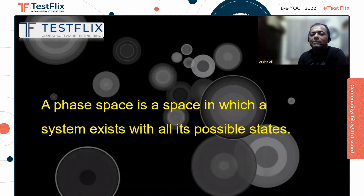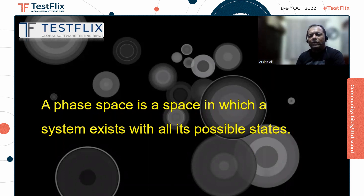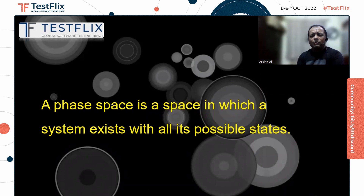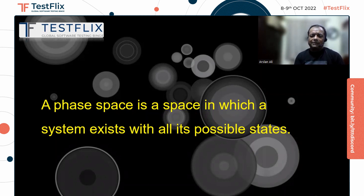A phase space is a space in which a system exists with all its possible states. So if a system exists with different interrelated objects, interfaces, data, its own structure, its own written processes, its own policies, business policies, user psychologies, and everything — all these complexities put together and interrelated within a closed box space — that is the concept of a phase space.